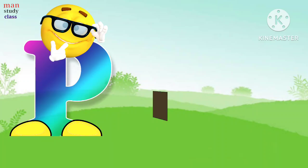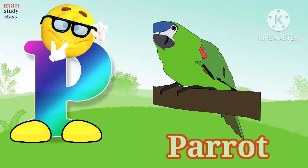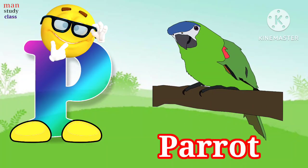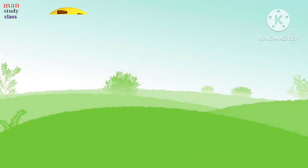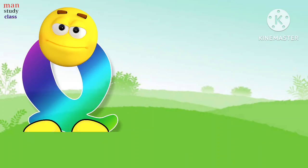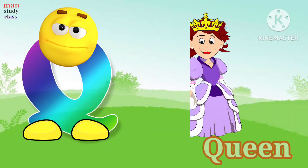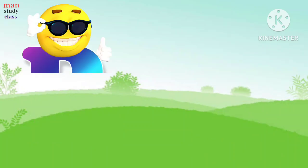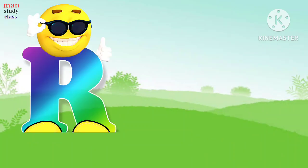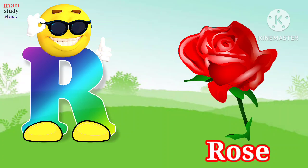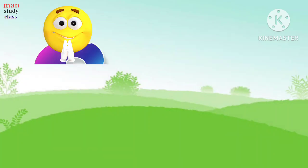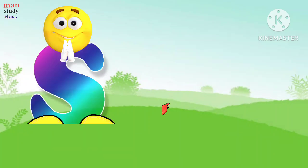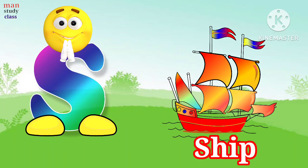P for parrot, parrot means tota. Q for queen, queen means rani. R for rose, rose means gulab. S for sheep, sheep means jahaj.